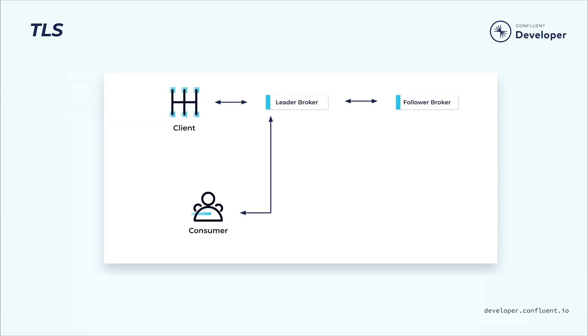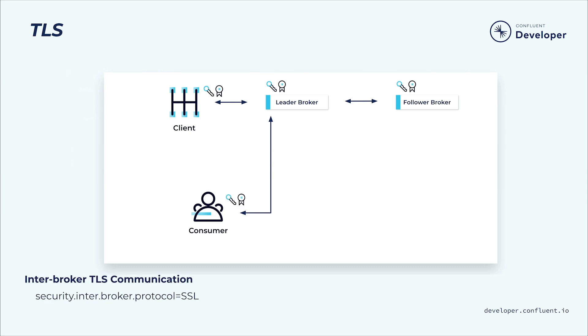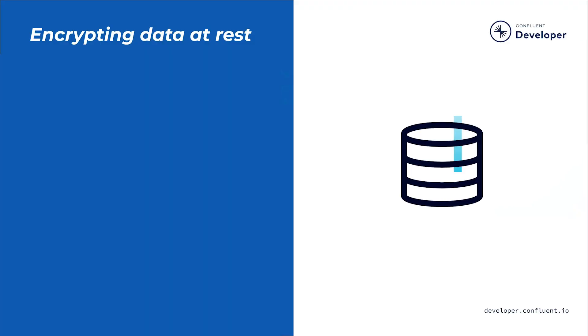TLS uses private key and certificate pairs, which are used during the TLS handshake process. Each broker will need its own private key and certificate pair to encrypt the traffic. If client authentication is enabled, each logical client will also need a private key and certificate pair. The broker uses the client certificate to authenticate the client. If you want to enable TLS inter-broker communication, add security.inter.broker.protocol equals SSL to the broker properties file. Be aware that enabling TLS for encrypting data in transit can have a performance impact on the system because of the CPU overhead needed to encrypt and decrypt the data.